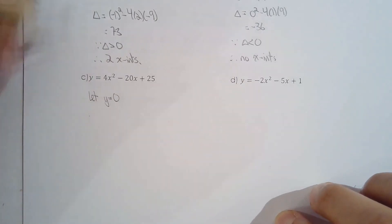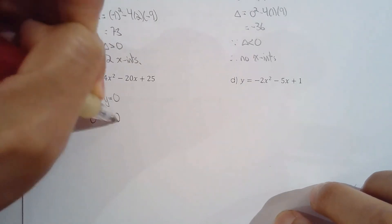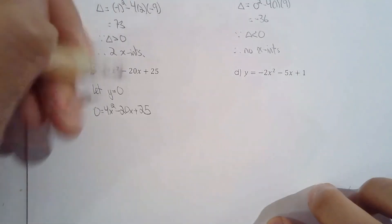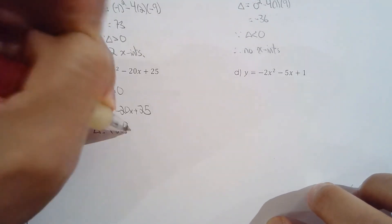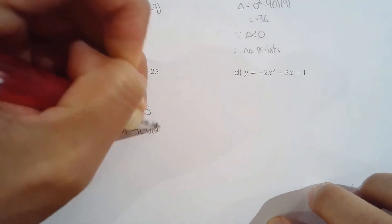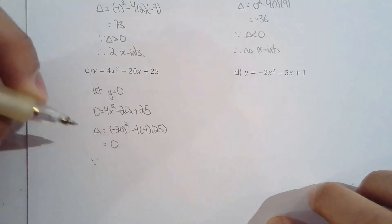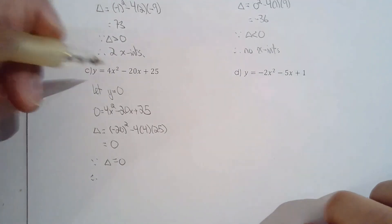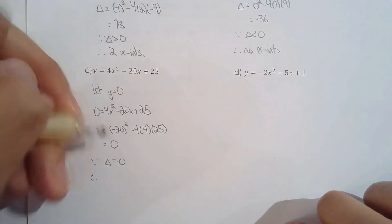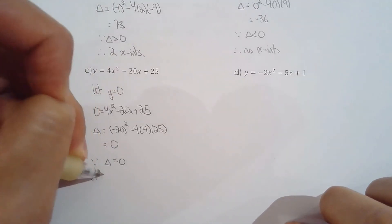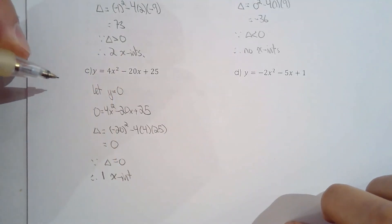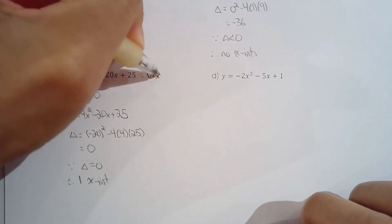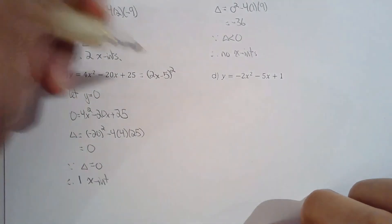For the next one, let y equal zero and focus on that trinomial — hopefully it's screaming at you. The discriminant is zero. How did I know? Because it's a perfect square trinomial. Whenever you have a perfect square trinomial, the discriminant is zero. That means one x-intercept. The trinomial factors as (2x minus 5) squared, giving an x-intercept of 5 over 2.